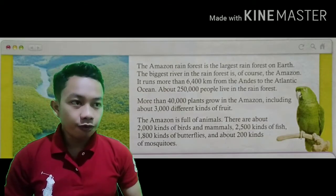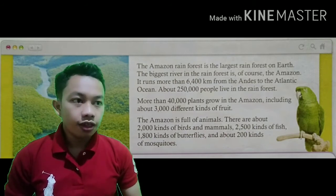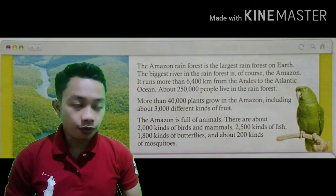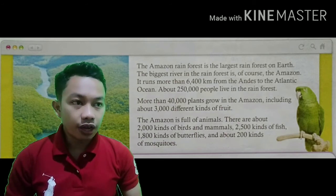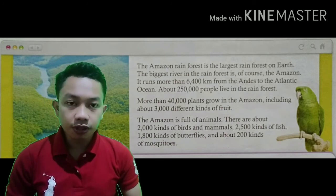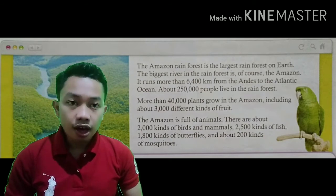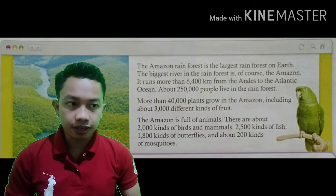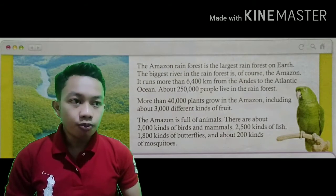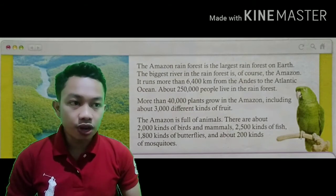The Amazon rainforest is the largest rainforest on earth. The biggest river in the rainforest is of course the Amazon. It runs more than 6,400 kilometers from the Andes to the Atlantic Ocean. About 250,000 people live in the rainforest. More than 40,000 plants grow in the Amazon, including about 3,000 different kinds of fruit.